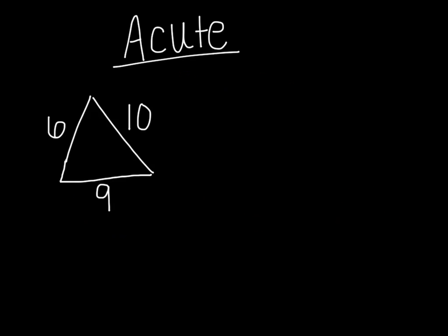Let's see what happens with the square of the side lengths on an acute triangle. On a triangle, we're going to label our shorter sides A and B — it doesn't really matter which one is which — and then the third side, we're going to label C. That's going to be our longest side. What we're going to do is take A squared and add it to B squared, and then see how that compares to C squared.